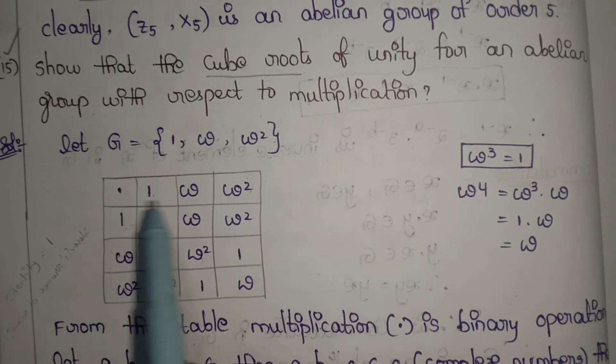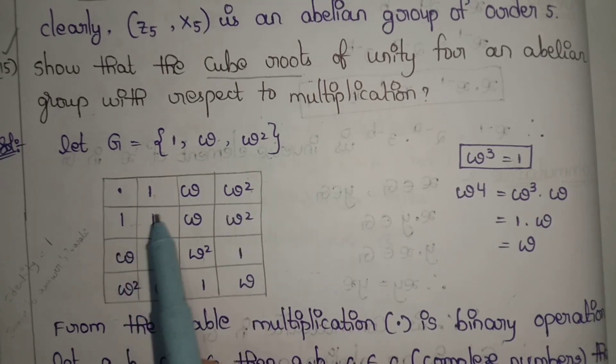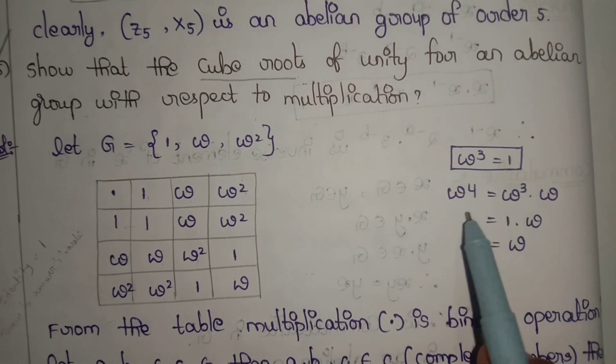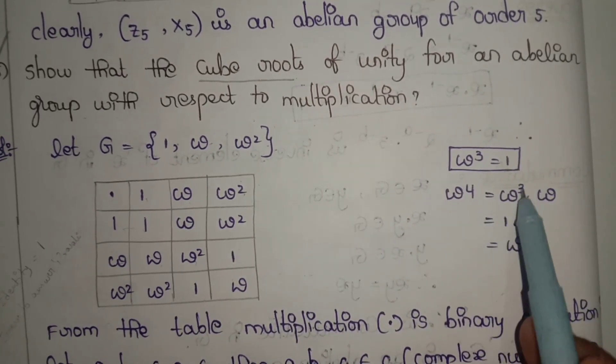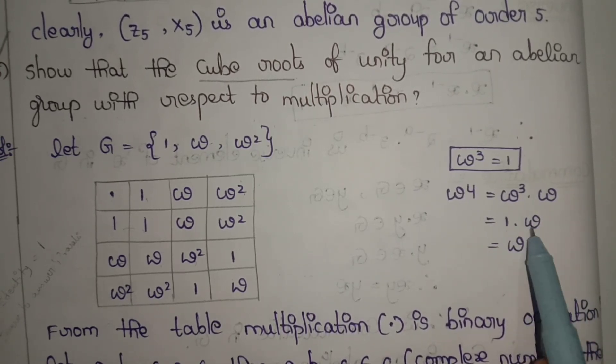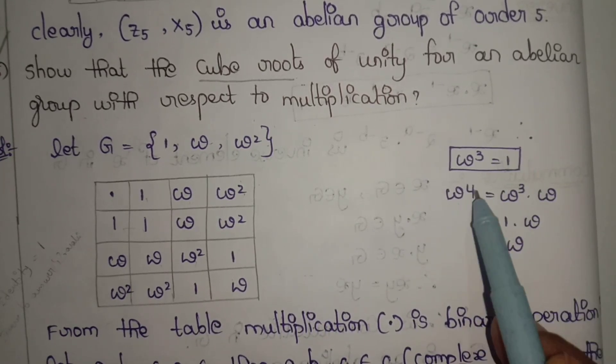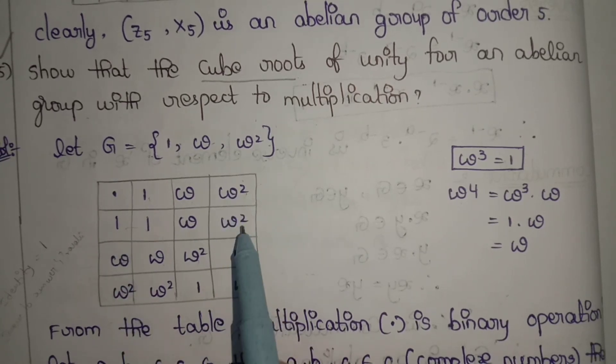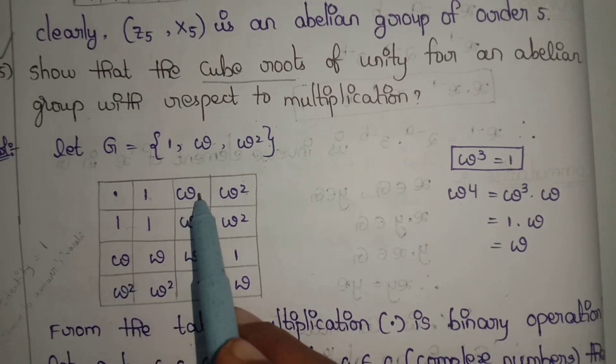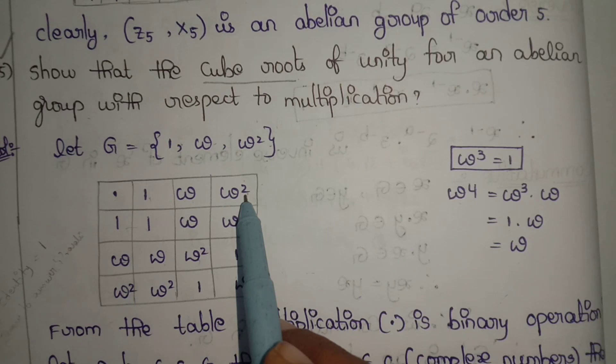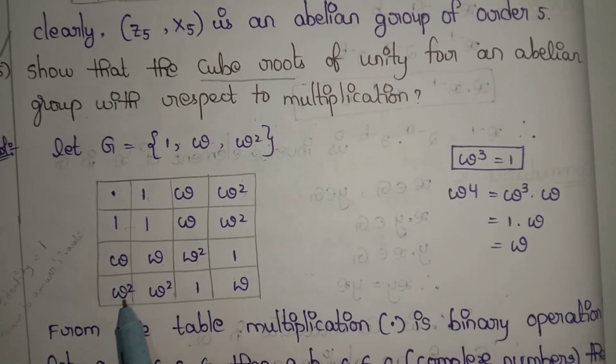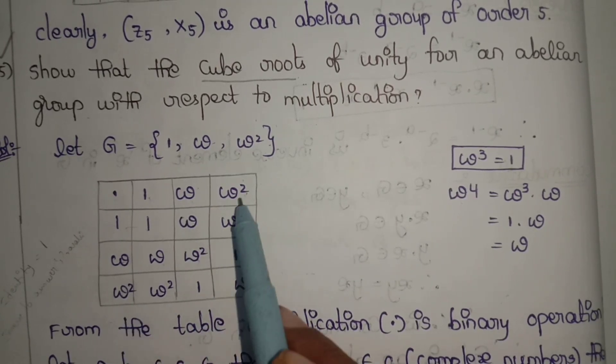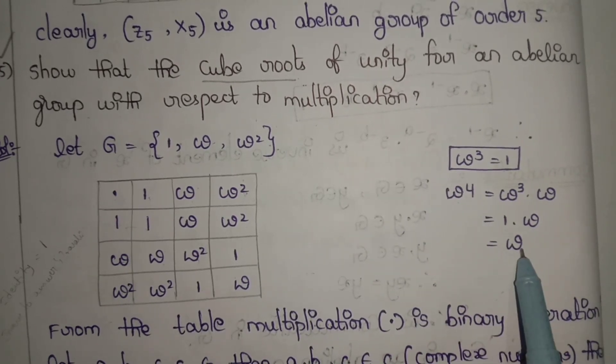For the composition table, we calculate: 1, omega, omega square by 1, omega, omega square. We use omega cube value equals 1, and omega to the 4th equals omega. So omega to the 4th is omega cube into omega, which is 1 into omega equals omega. The table entries are: 1 times 1 is 1, 1 times omega is omega, 1 times omega square is omega square, omega times 1 is omega, omega times omega is omega square, omega times omega square is omega cube which equals 1, omega square times 1 is omega square, omega square times omega is omega cube which equals 1, and omega to the power 4 is omega. This is the composition table.